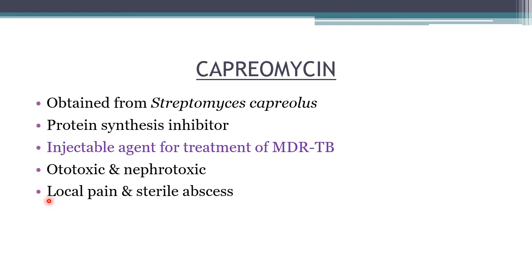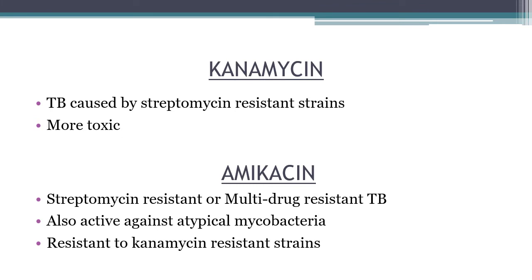Injection of capreomycin may cause local pain and sterile abscess. Kanamycin is used in tuberculosis caused by streptomycin-resistant strains and is more toxic than other aminoglycosides used for TB. Amikacin is used to treat streptomycin-resistant and multi-drug resistant tuberculosis; it is also active against atypical (non-tuberculous) mycobacteria and is effective against kanamycin-resistant strains.